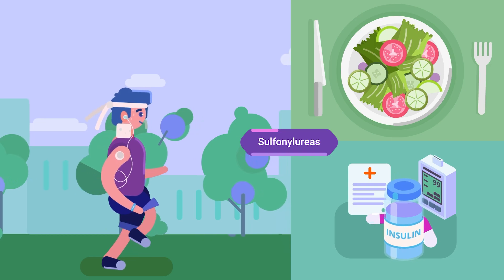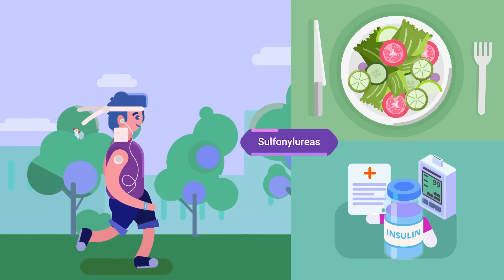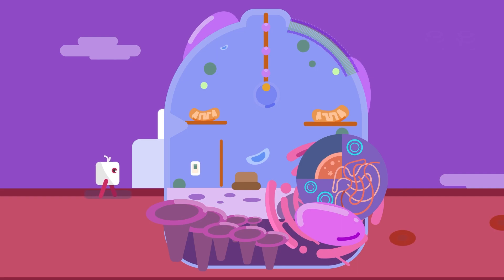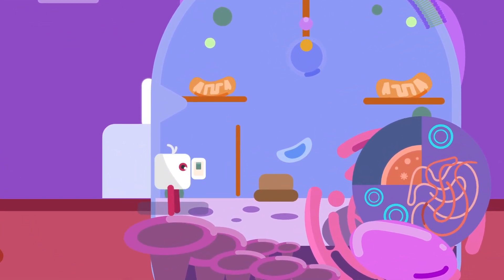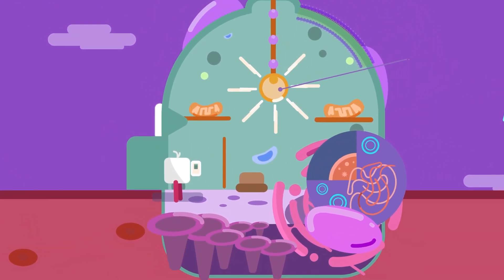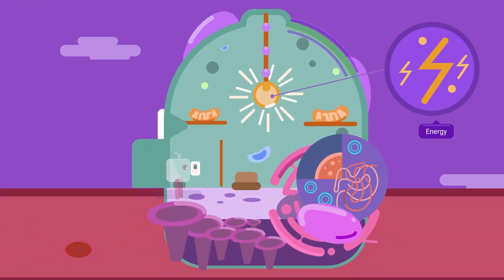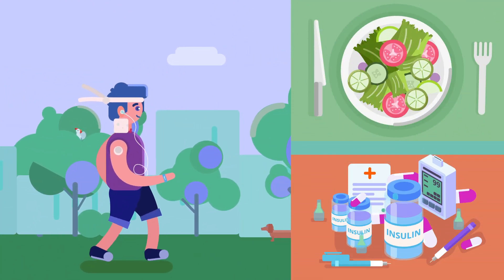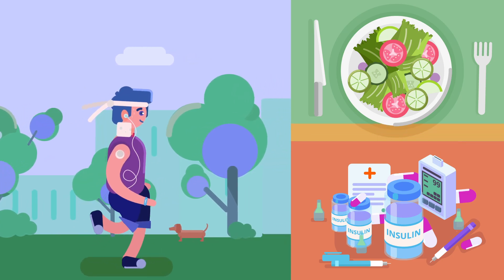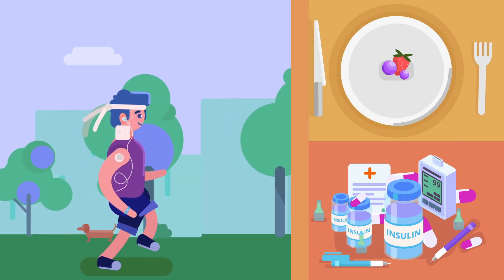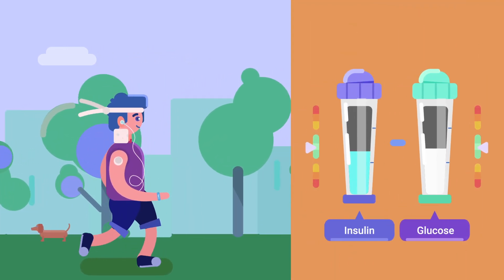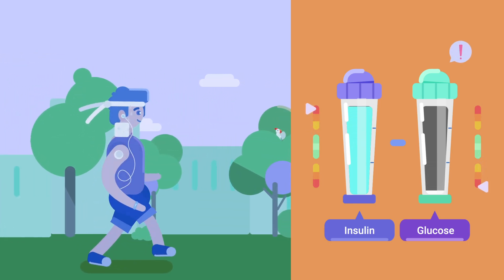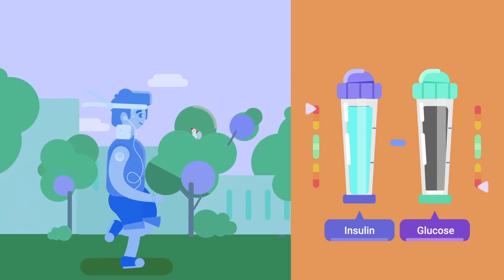For example, insulin or sulfonylureas. By using them, glucose can re-enter the cells of our organs and produce energy. However, an increased dose of these medications or an insufficient diet can cause blood glucose concentration to drop below the lower limit of normality of 70 mg per deciliter, causing hypoglycemia.